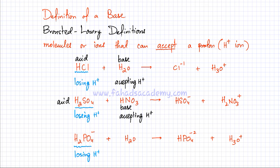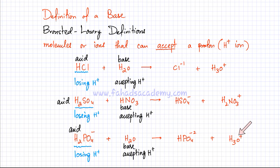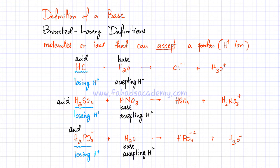In the third reaction, H2PO4-1 loses an H+1 ion, so it is your Bronsted-Lowry acid. The H2O molecule is your Bronsted-Lowry base because it is accepting H+ ions — H2O becomes H3O+ on the product side, meaning it gained an H+1 ion. So H2O here is your Bronsted-Lowry base. To summarize: molecules or ions that can accept a proton are your Bronsted-Lowry bases.